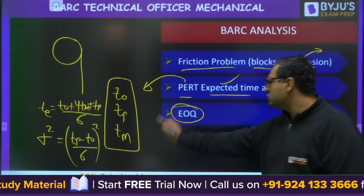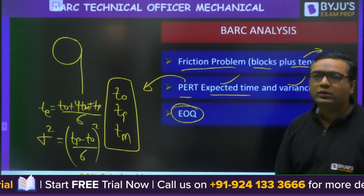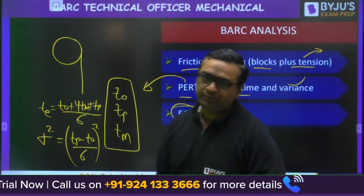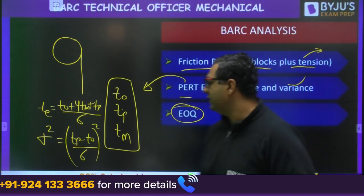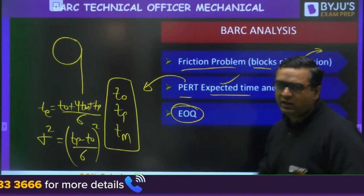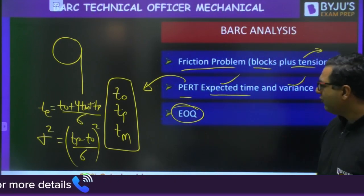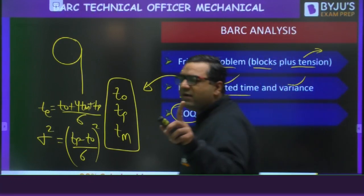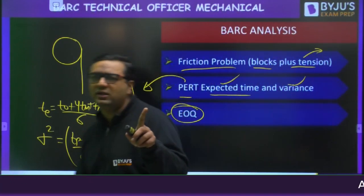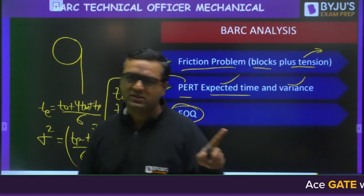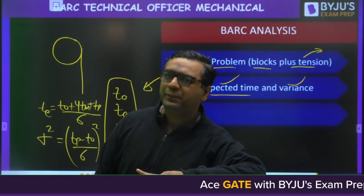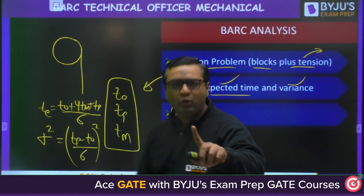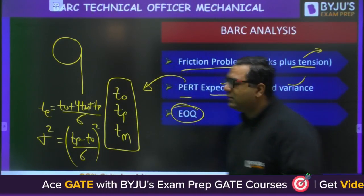One question was from finding out the Economic Order Quantity (EOQ) — that is inventory control. In my mock tests, the industrial engineering questions were either from PERT/CPM or from inventory — you can check that.